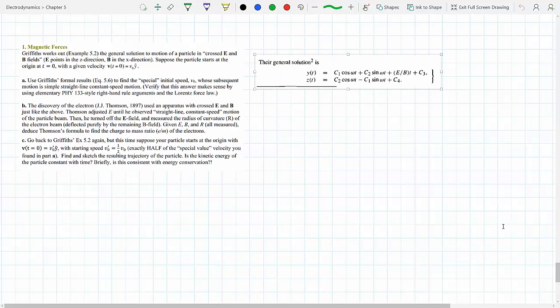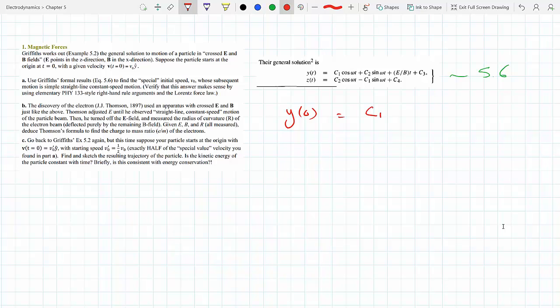He wants the initial speed v_0 whose subsequent motion is a simple straight-line constant speed, using equations 5-6. Now first of all, it's an initial speed, so that means t equals zero. Let's keep that after we find the derivative so we can first figure out what y dot is.